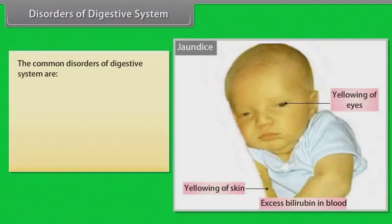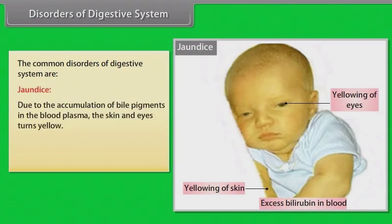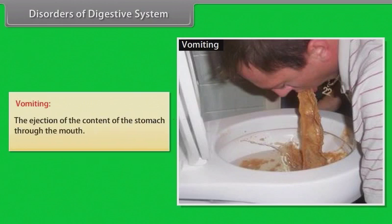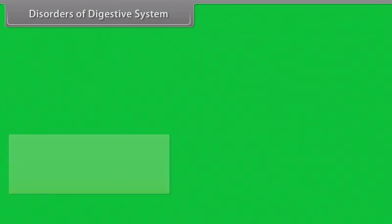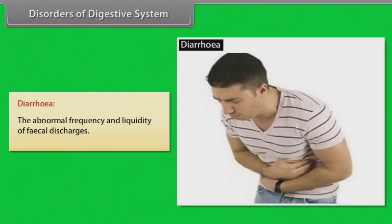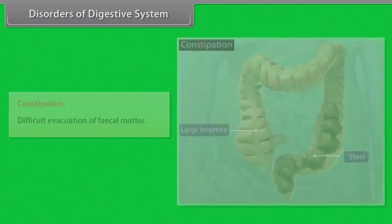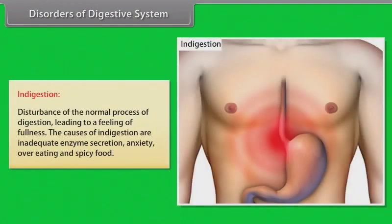The common disorders of the digestive system are: jaundice — due to accumulation of bile pigments in the blood plasma, the skin and eyes turn yellow, caused by the liver's breakdown of red blood cells; vomiting — ejection of stomach contents through the mouth; diarrhea — abnormal frequency and liquidity of faecal discharges; constipation — difficult evacuation of faecal matter; and indigestion — disturbance of the normal digestion process leading to a feeling of fullness, caused by inadequate enzyme secretion, anxiety, overeating, or spicy food.